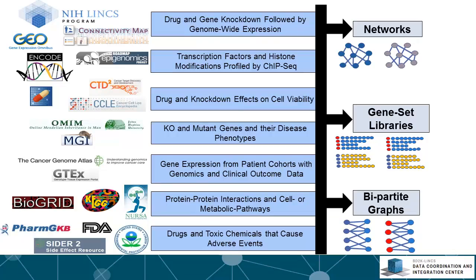In the first review we listed the most comprehensive resources of experimental data collected in the field and categorized the data into seven subsections. The first is Drug and Gene Knockdown, followed by Genome-wide Expression — which is what the Links program is all about — including the connectivity map and work done by many Links centers, as well as data deposited in the Gene Expression Omnibus. The next category is Transcription Factors and Histone Modification profiled by ChIP-Seq.